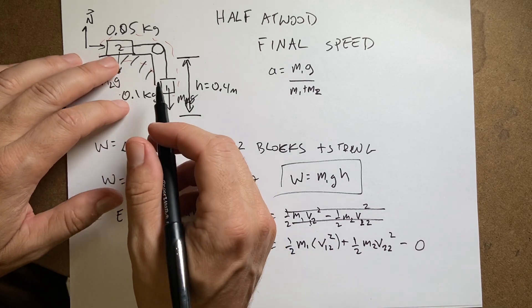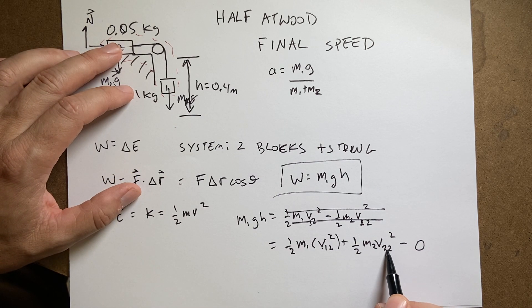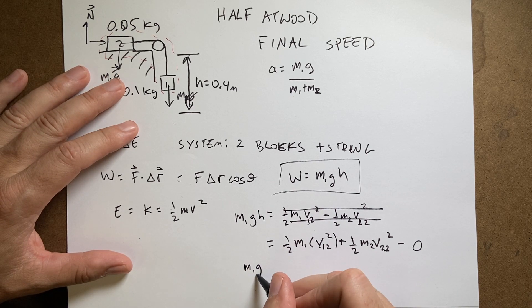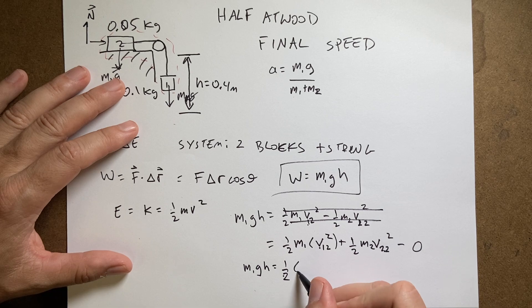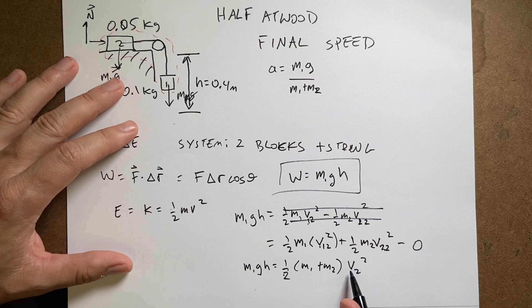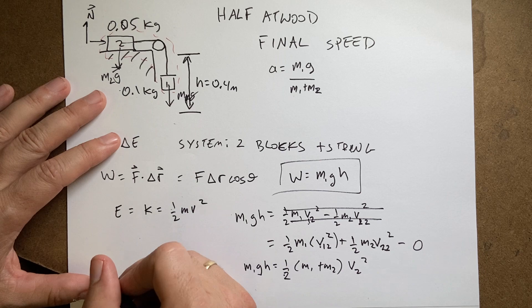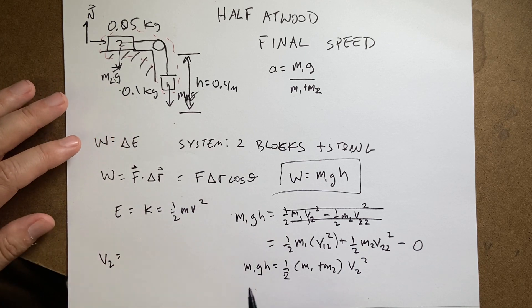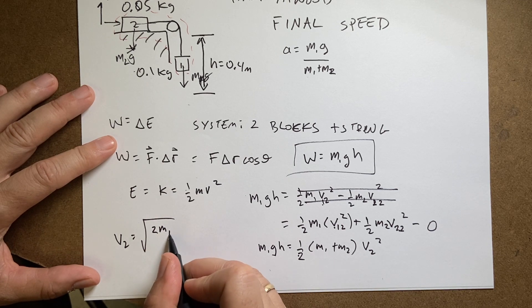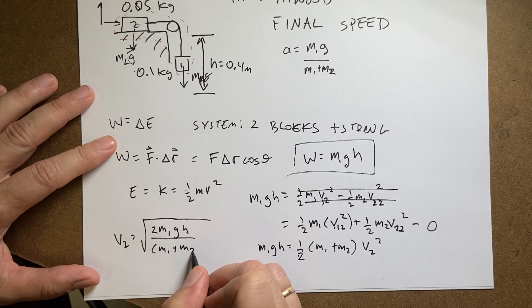And now, if these two are connected by a string that doesn't stretch, this velocity has to be equal to that velocity. So I get m1gh equals one-half (m1 plus m2) v2 squared. And I want to solve this for v2. I'm going to multiply both sides by 2, divide both sides by m1 plus m2, and take the square root. And I get v2 equals the square root of 2 m1gh over (m1 plus m2).